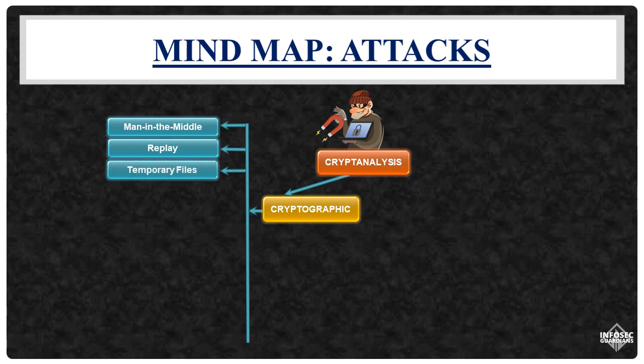Temporary file attacks: Temporary files often store plain text, ciphertext, and encryption keys during data encryption and decryption. These files may lack sufficient security, enabling attackers to access sensitive information through temporary file attacks.